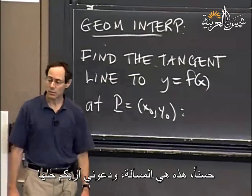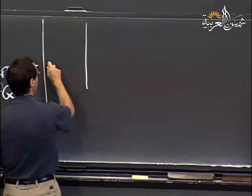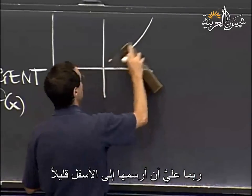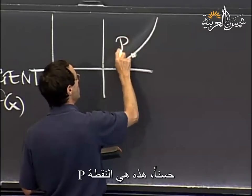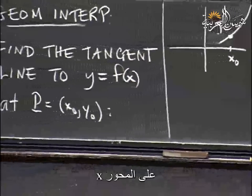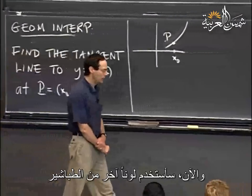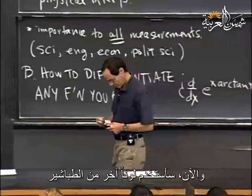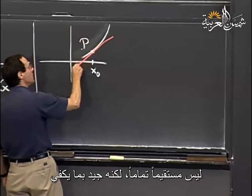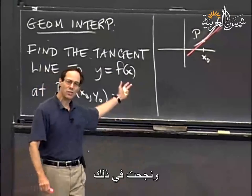Here's the problem and its solution. Let's graph the function — here's its graph, and here's a point P above the point x₀. Using another color of chalk, here's the tangent line. That's the geometric problem accomplished. It's an interesting question how physically I managed to know what to do to draw this tangent line.